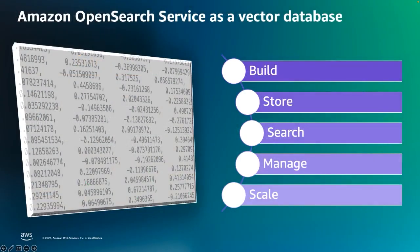Here are the top five reasons as to why OpenSearch can also be used as a vector database. OpenSearch Service allows you to build, store, search, manage, and scale vector embeddings. This is accomplished using the native OpenSearch model API that is part of the model serving framework we discussed earlier.